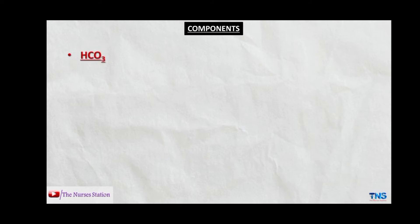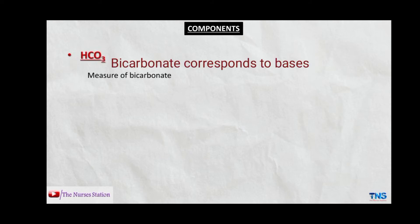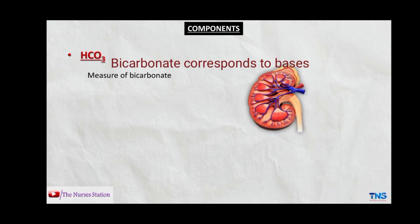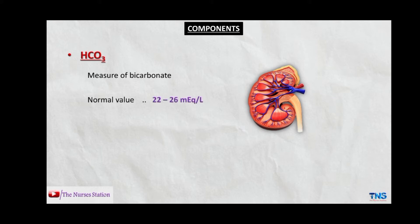The next is HCO3 — it is the measure of bicarbonates in the blood. Remember, bicarbonates are basic and the amount of bicarbonates in our body is regulated by the kidneys. The normal value for bicarbonates is 22 to 26 milliequivalents per liter. The last is PaO2, which is the measure of oxygen in the arterial blood, with a normal value of 80 to 100 mmHg.